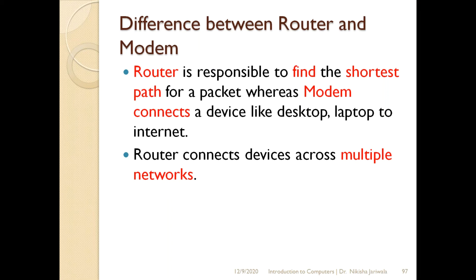The router is responsible for finding the shortest path. If a data packet has to travel through the computer network, the router determines the shortest path from source to destination so the data packet can reach well. If we talk about the modem, if a device needs to connect with the internet, then we use the modem.